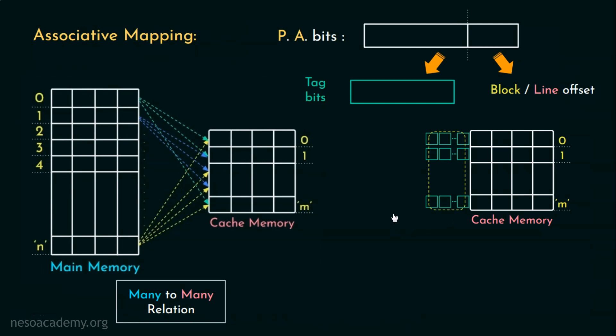Nonetheless, having as many comparators as the cache lines working in parallel can be a solution but it won't be an effective one as this would increase the hardware cost exponentially. This implementation would also increase the heat within the circuitry as well. Anyway, for now, let's work with this.